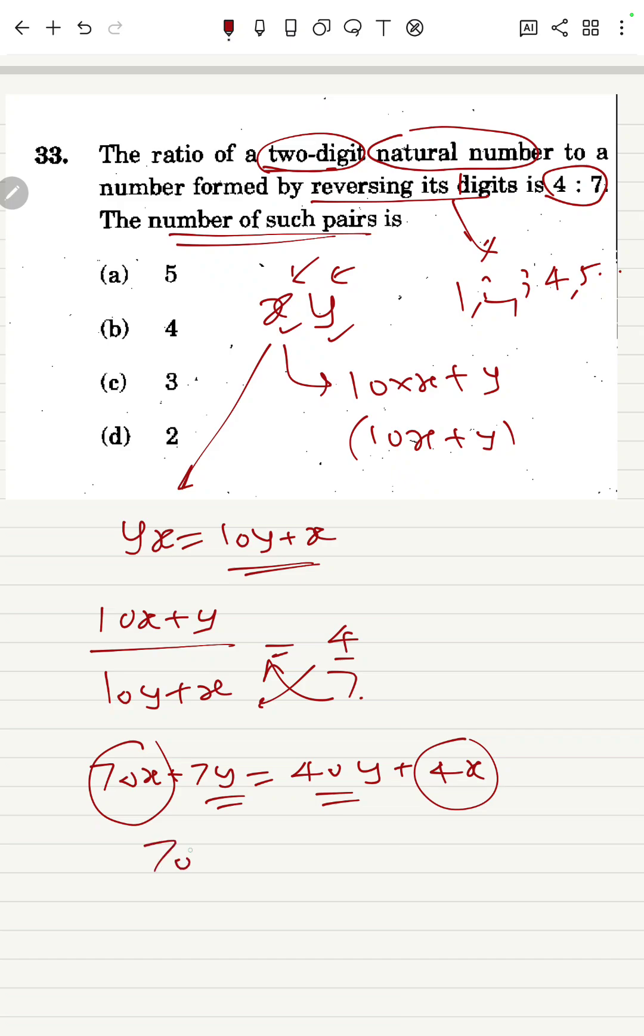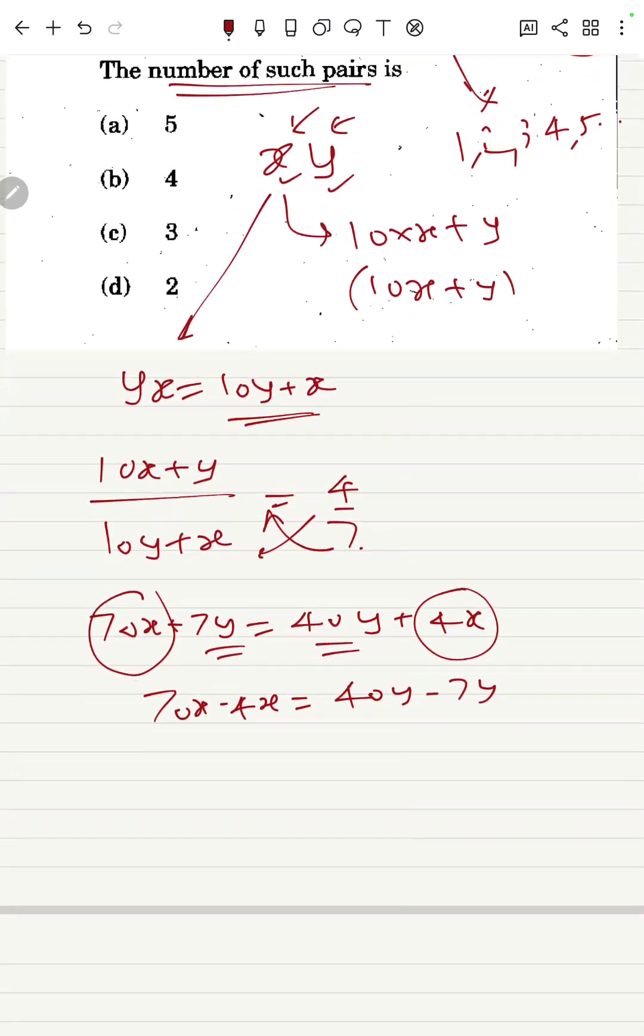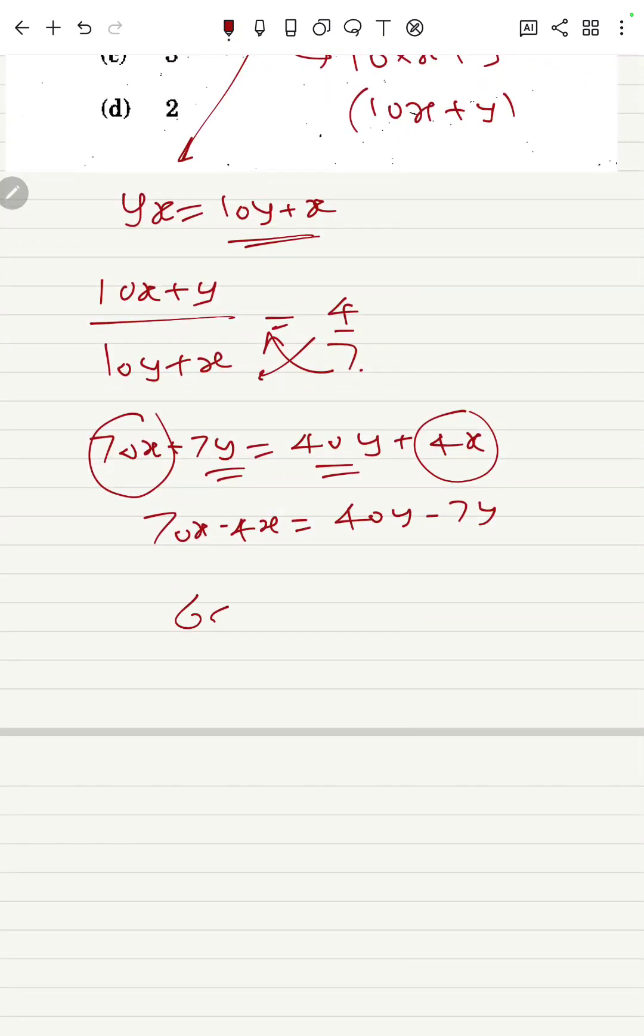So 70X minus 4X equals 40Y minus 7Y, so it will be 66X equals 33Y, nothing but 2X equals Y.